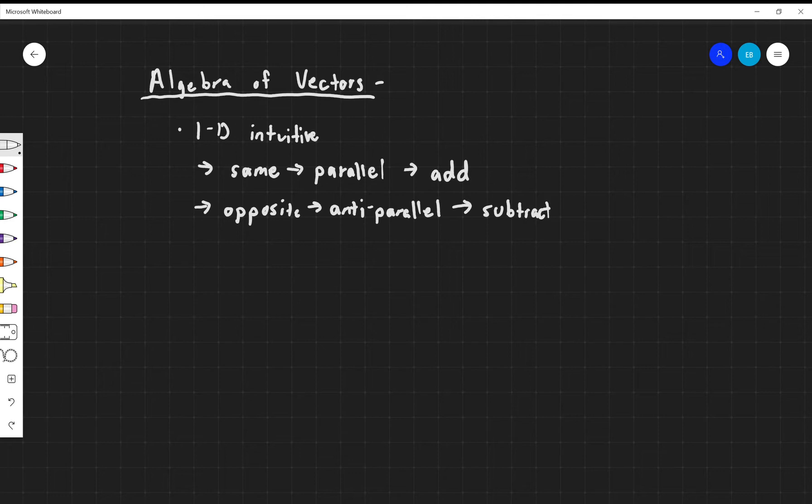We can also do multiplication. If you multiply a vector by a number, if you want to increase its magnitude by multiplication, you just multiply it. That's all you have to do to multiply a vector by a number. That's pretty straightforward.